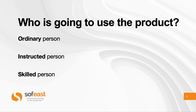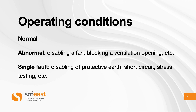Operating conditions is another very important concept. Normal operating condition is the way the product is supposed to run most of the time. An abnormal condition is, for example, a fan being disabled so it cannot cool the product as intended — the product might overheat, but there still might not be any hazard. From the point of view of this IEC standard, this would be no problem as long as the product overall remains safe. Blocking a vent, for example, falls under this category.